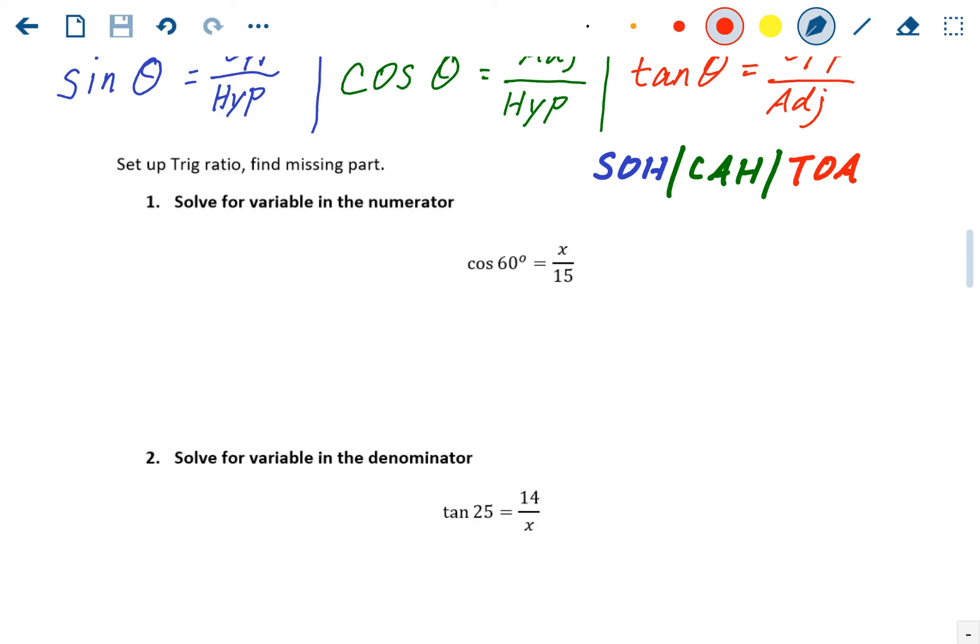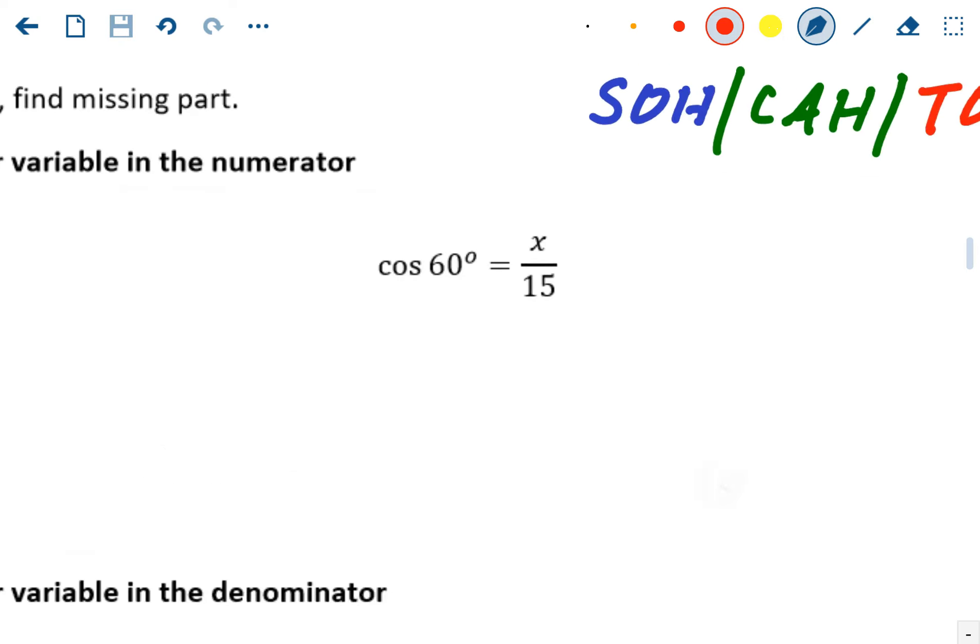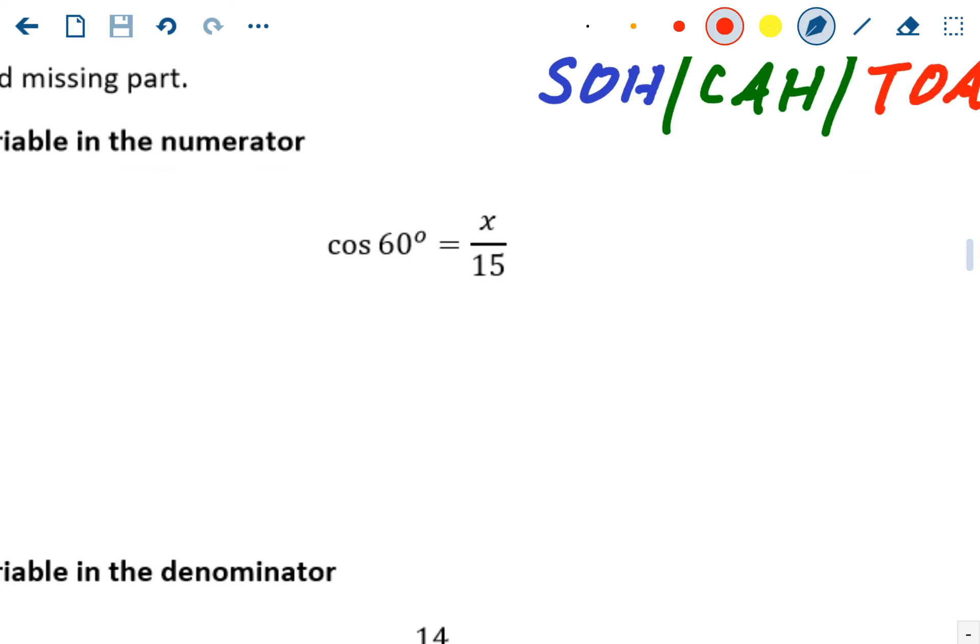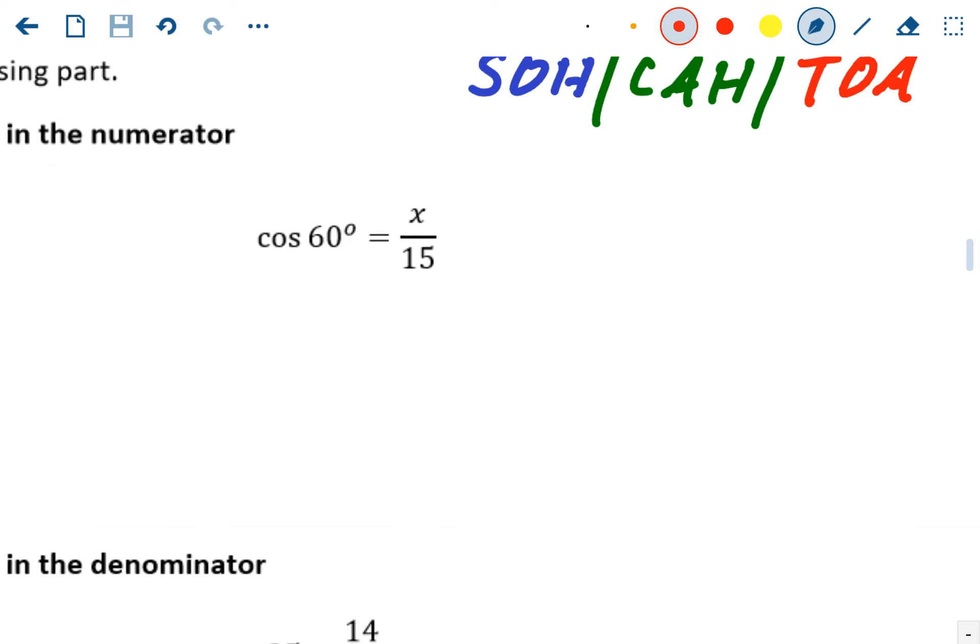The first scenario is solving for the variable in the numerator, which means you know the angle, you know the bottom side of the ratio, but you don't know the top side. So this is as simple as solving fractions. You will need a calculator to solve all of these just because you can't do trig functions by hand.